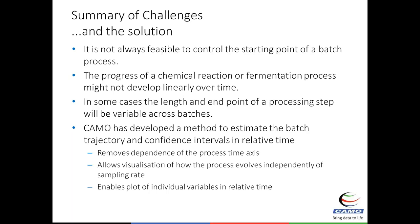To summarize the challenges: you cannot always control the starting point — bacteria in fermentation don't behave identically. Processes are often non-linear. Batch lengths can vary significantly — a chemical reaction might last 16 hours or 24 hours, which is not uncommon. Our method estimates the process trajectory and confidence intervals in relative time, making it independent of actual time elapsed and independent of sampling rate. So whether a batch is sampled every 5 minutes or every 10 minutes, that doesn't matter.